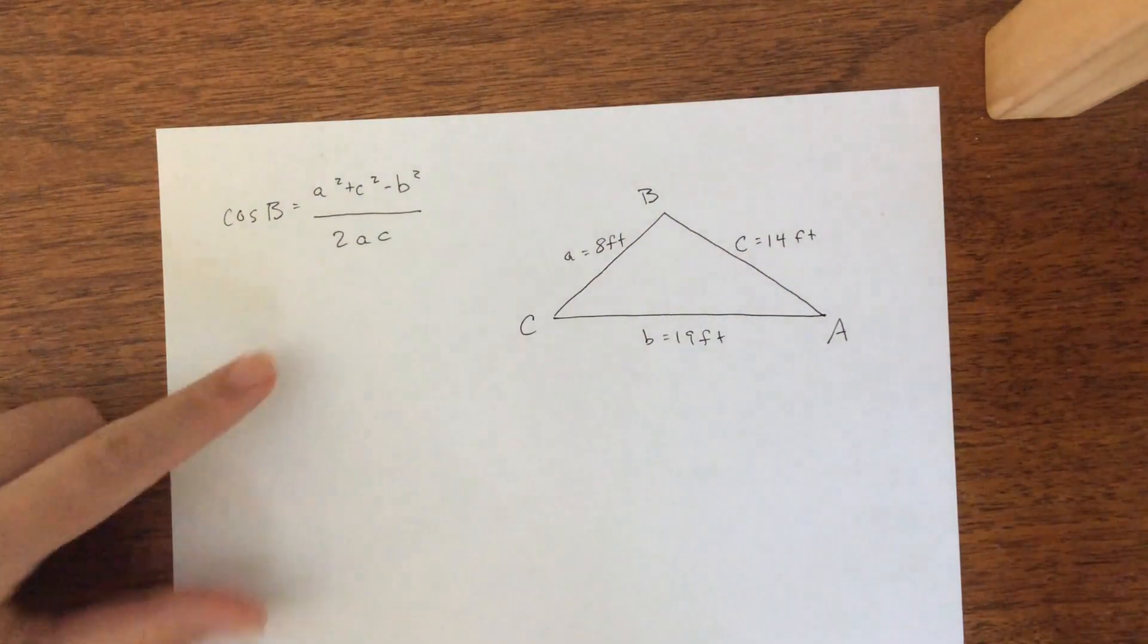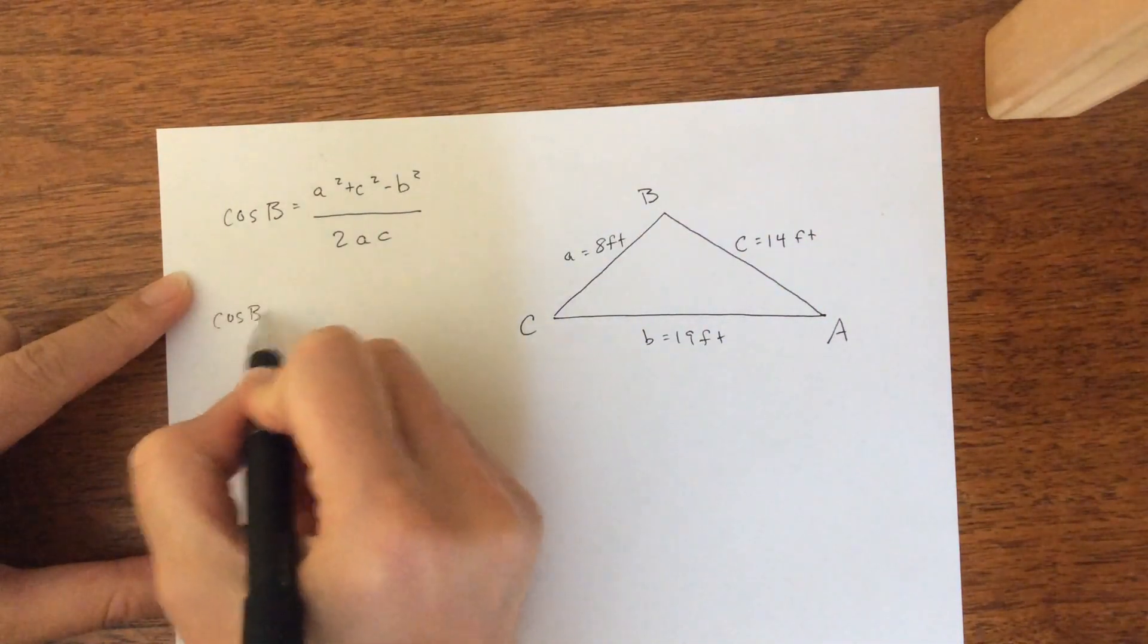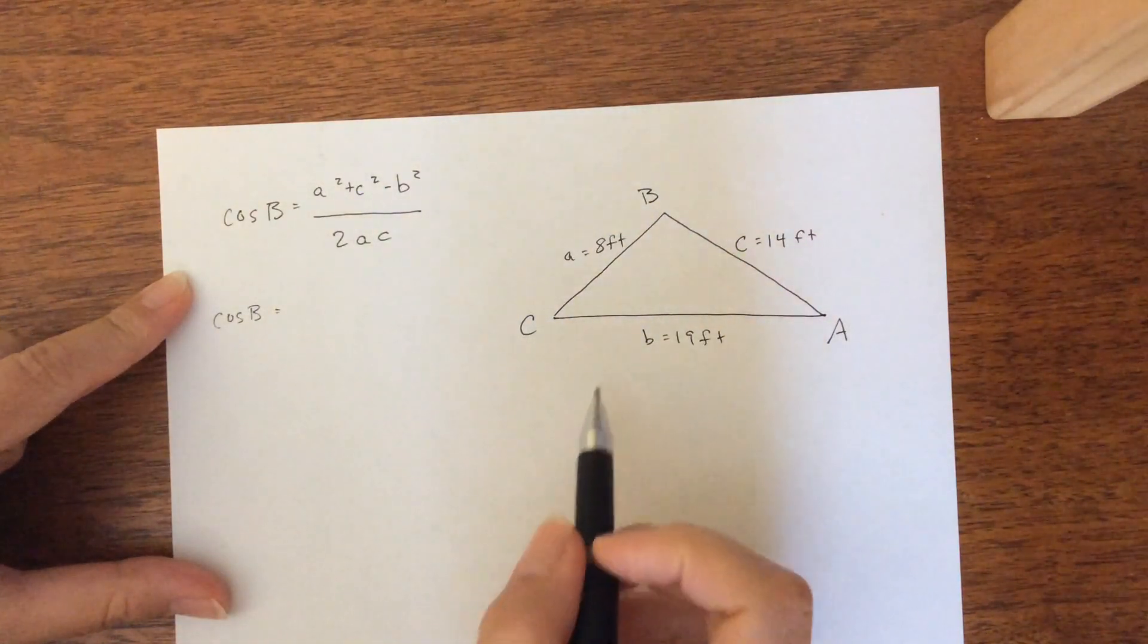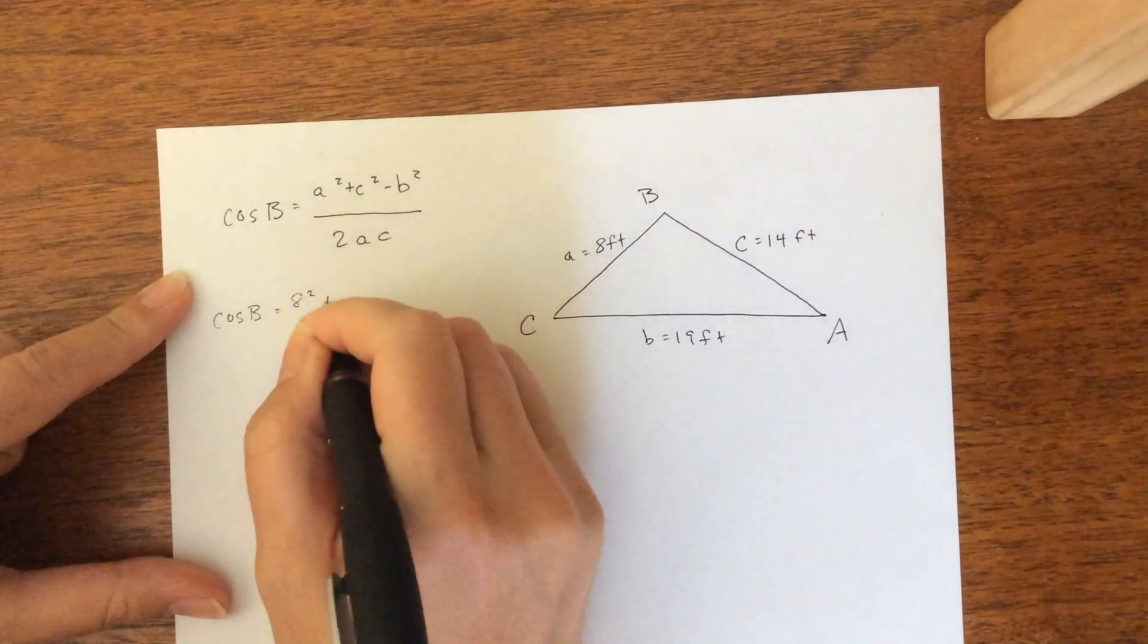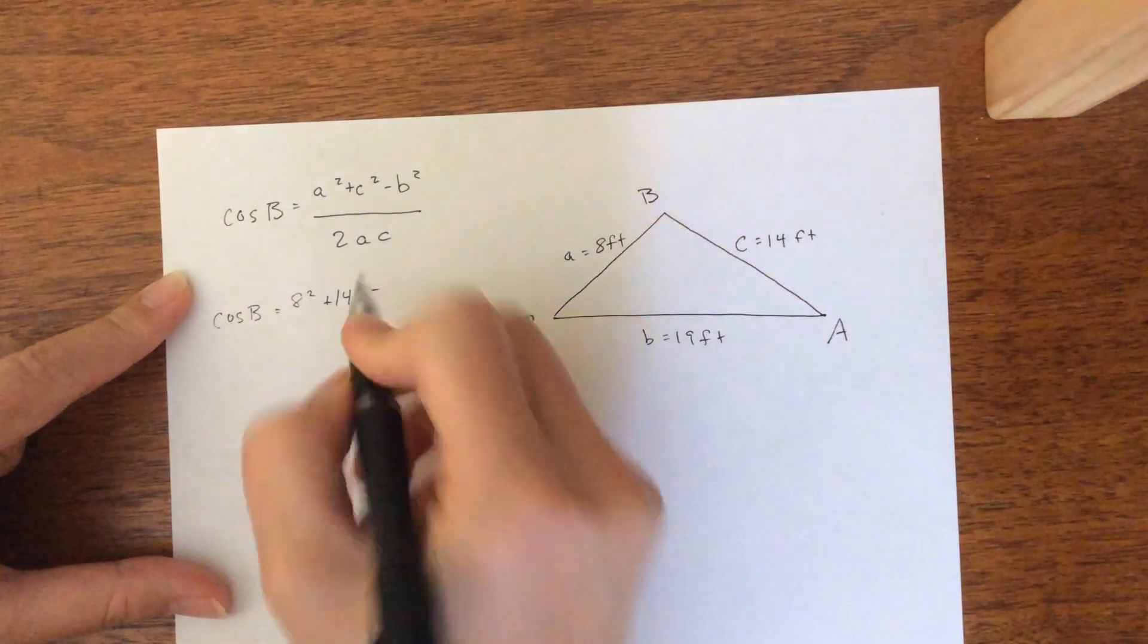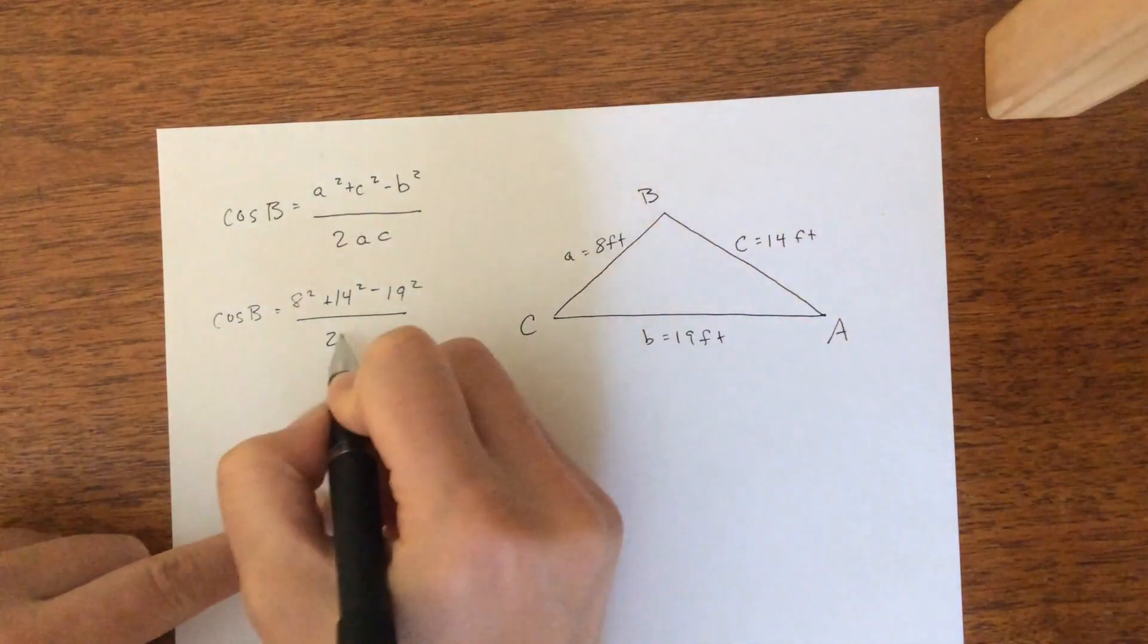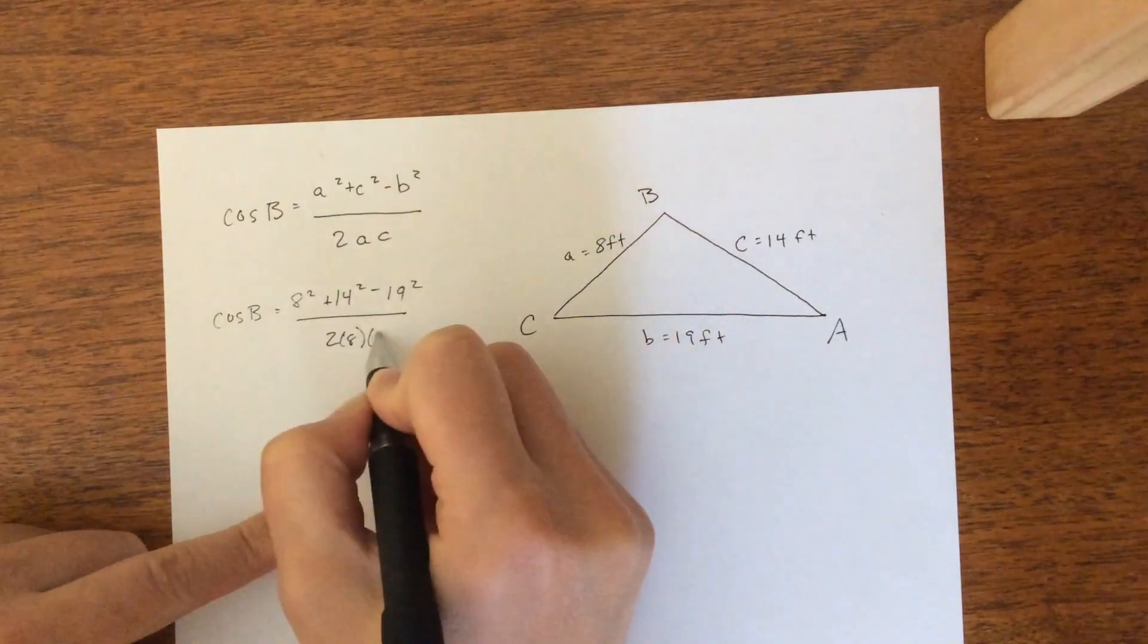So the cosine of B equals A squared plus C squared minus B squared over 2AC. Alright, so let's just fill in what we know. So if we're doing the cosine of B, we want A squared, which is 8 squared plus C squared minus B squared over 2 times A times C.